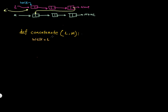Given this, I can put a condition: if walk is None - meaning linked list L is actually an empty linked list - then the merge of L and M is just going to be the first node of M. So I'll just return M. Assuming L is empty to begin with, we return M. Otherwise, if L is not None, I set up the loop.